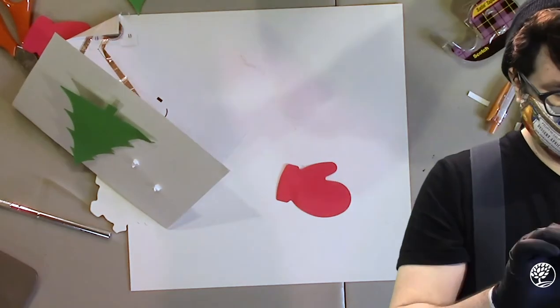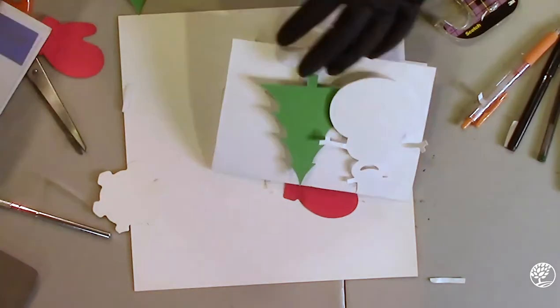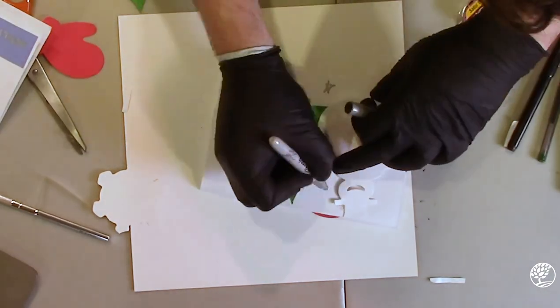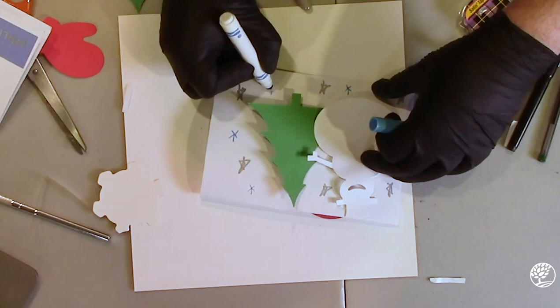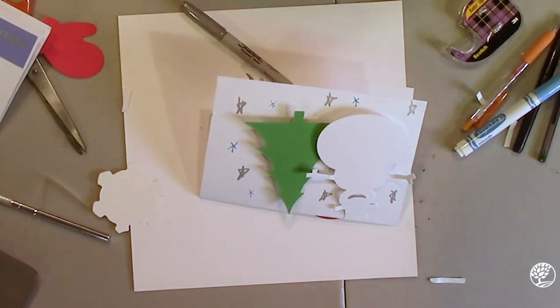So you can do this for all your shapes, overlapping them as you please. I added some other elements, little stars and snowflakes after I got my shapes on there, so feel free to get creative with this.